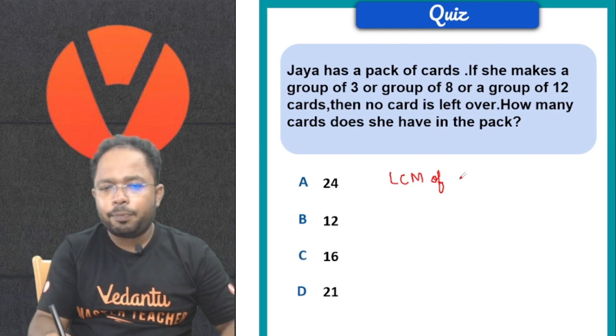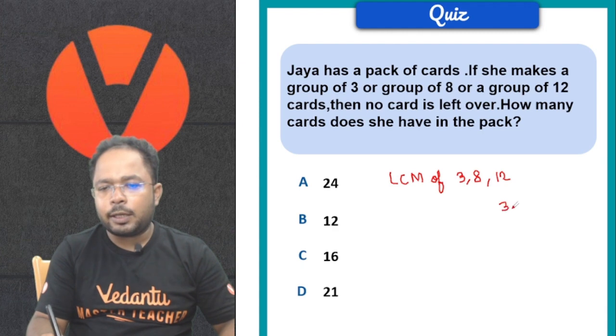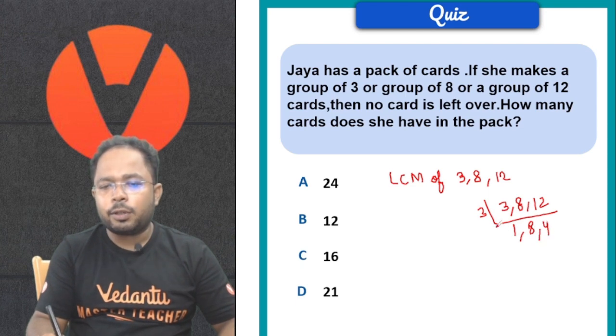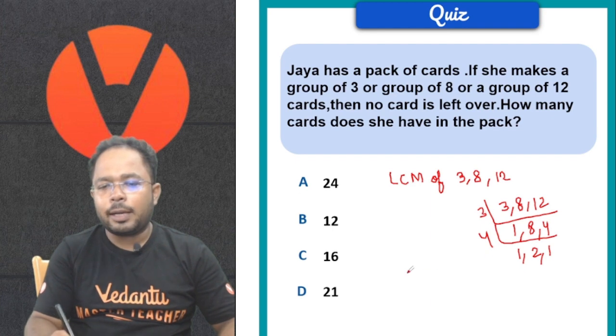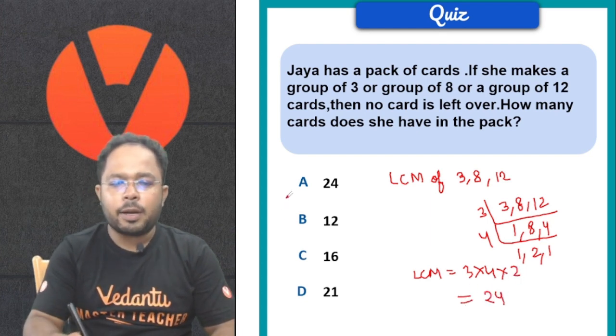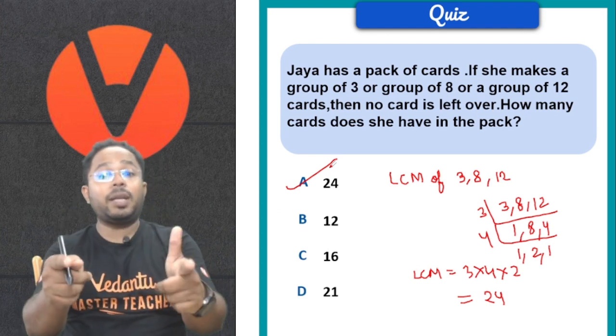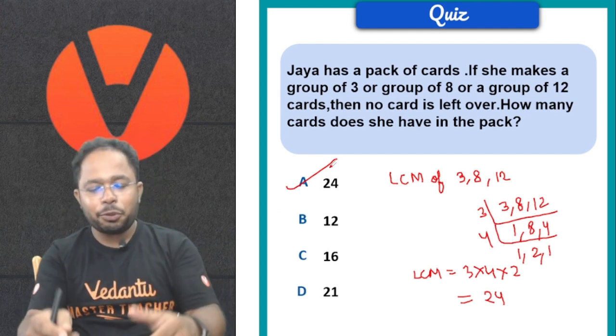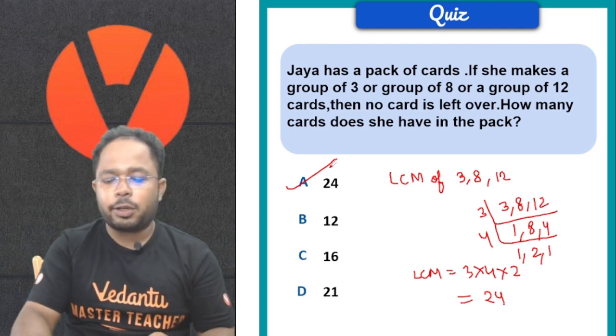LCM of 3, 8, and 12. Writing 3, 8, 12 - divide by 3 to get 1, 8, 4. Then divide by 4 to get 1, 2, 1. Then by 2 to get 1, 1, 1. So our LCM is 3 times 4 times 2, which gives 12 times 2 equals 24. So the right answer is 24.